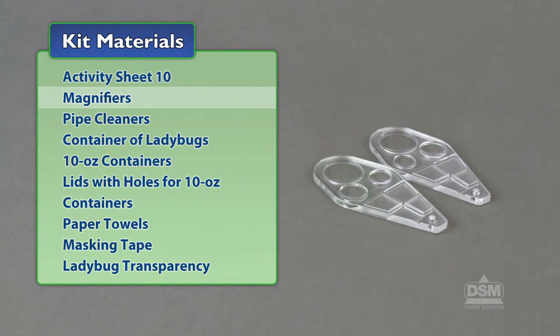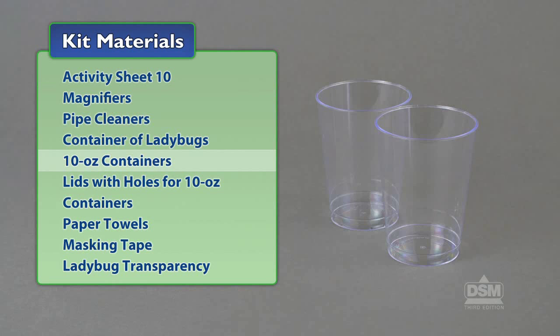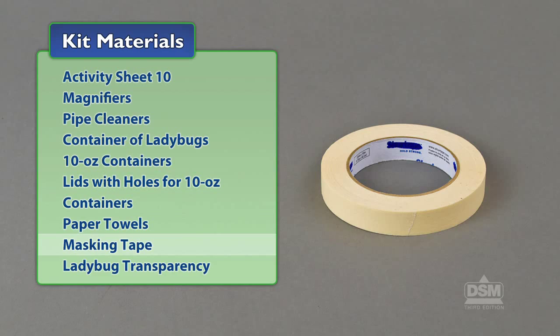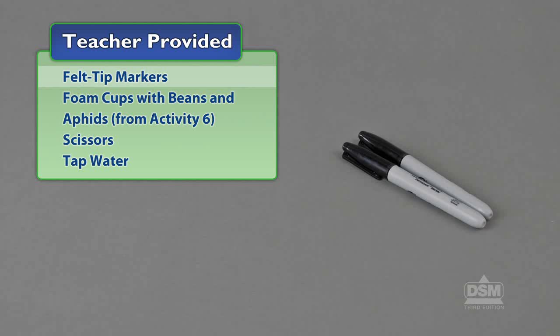You will need the following materials from the kit: activity 10-ounce containers, lids with holes for 10-ounce containers, paper towels, masking tape, and ladybug transparency.